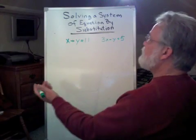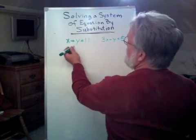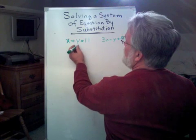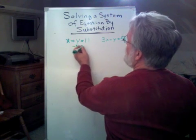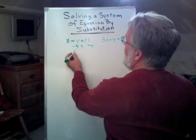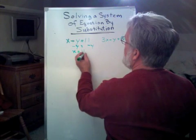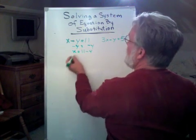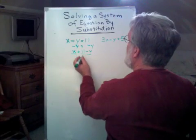To solve this for x, I want to get rid of my y off of this side and put my y over on this side. So I have x equals 11 minus y.